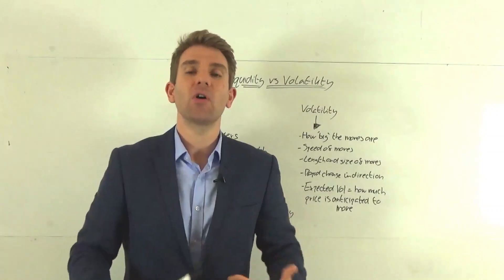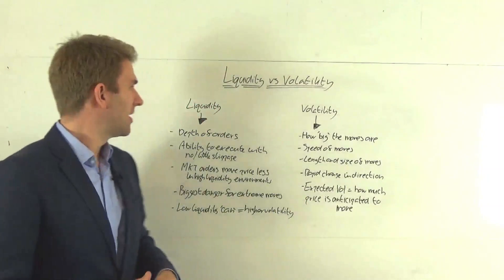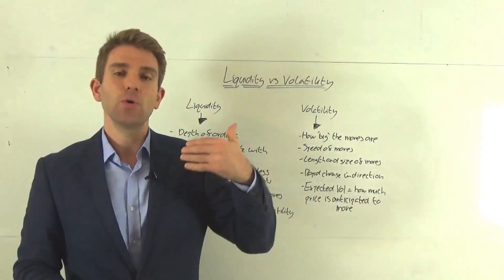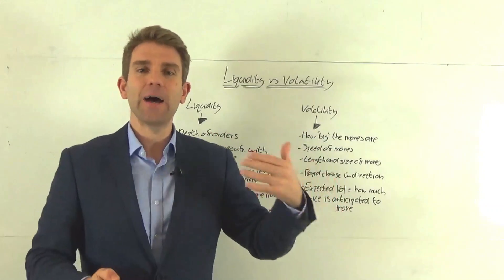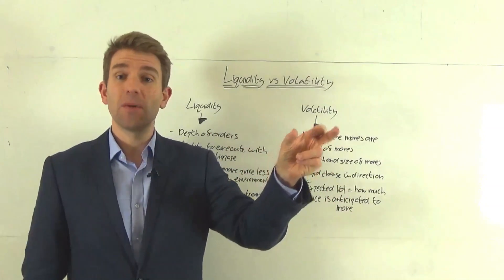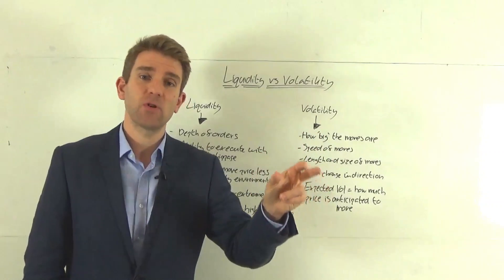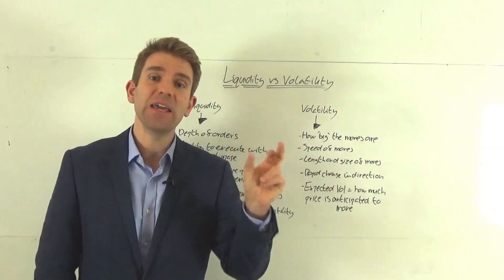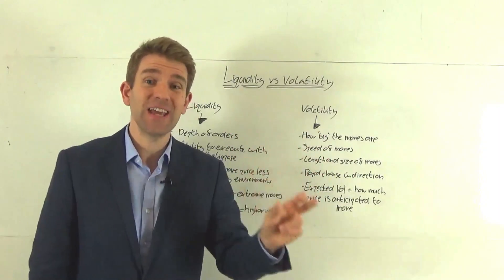So if we're looking at an order book for S&P 500, we might see, for example, 1,000 contracts, 2,000 contracts, 1,000 contracts at each individual price level, each tick that goes lower.